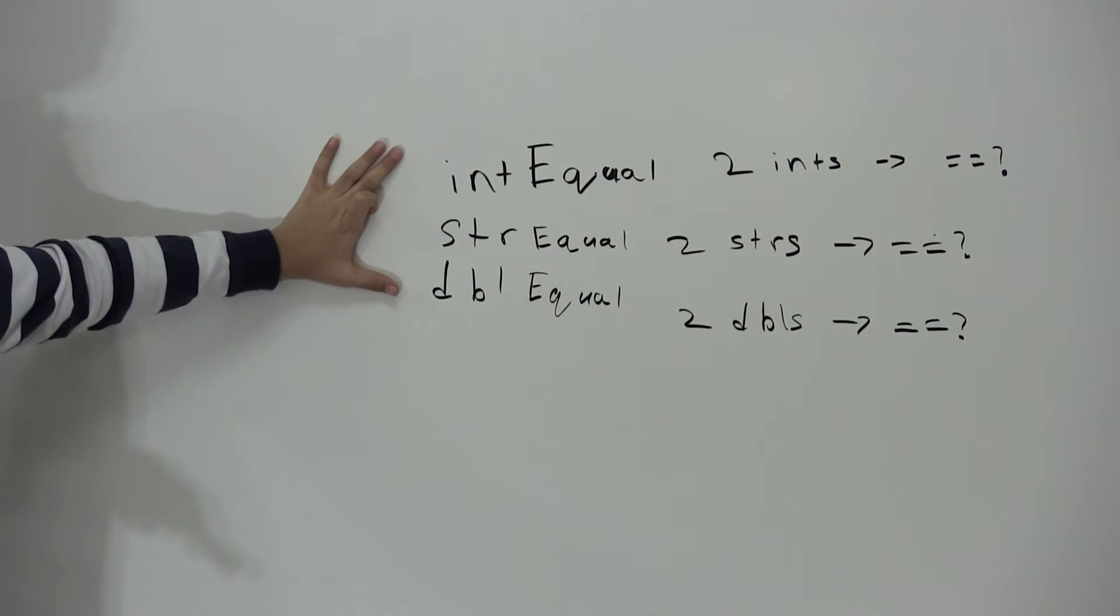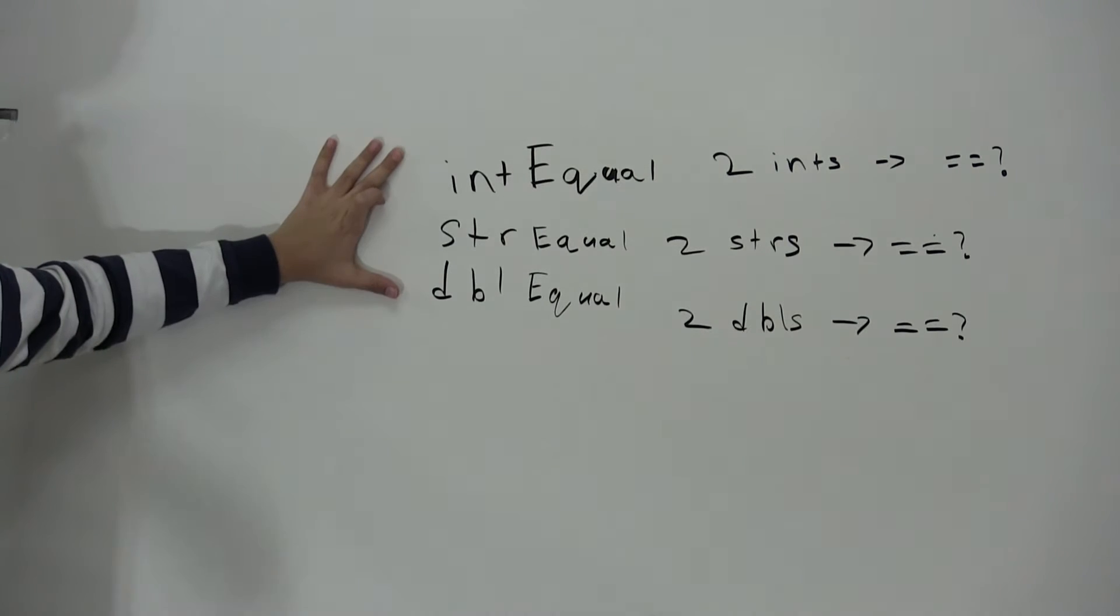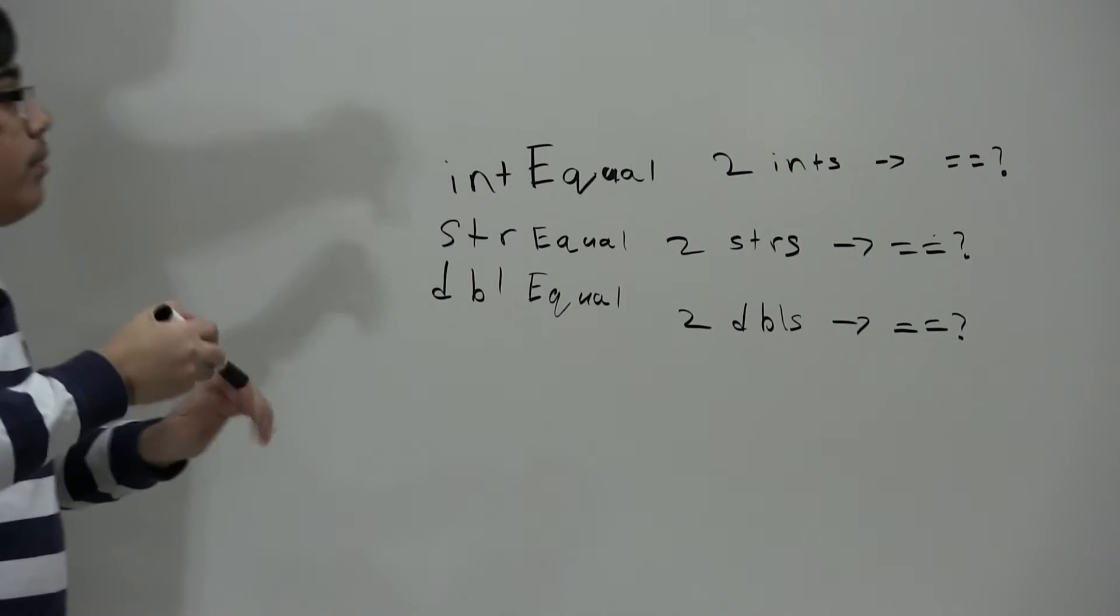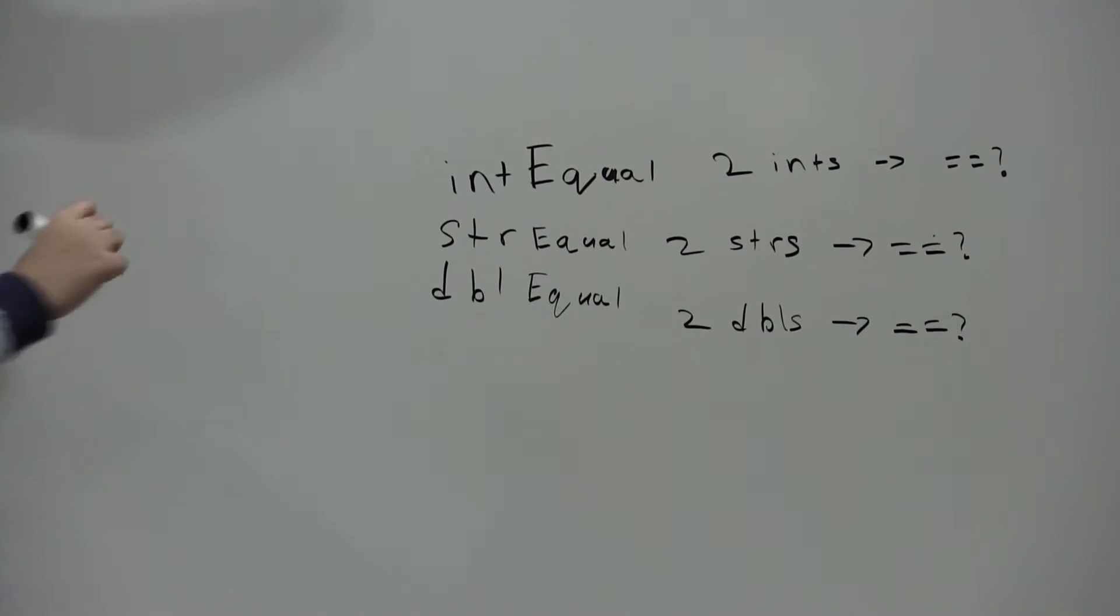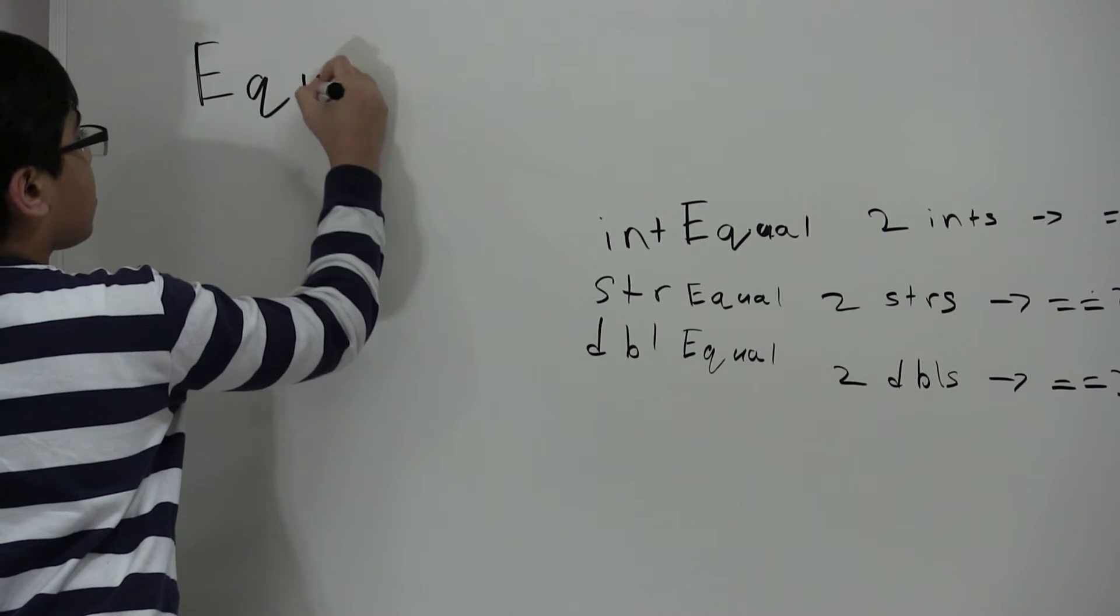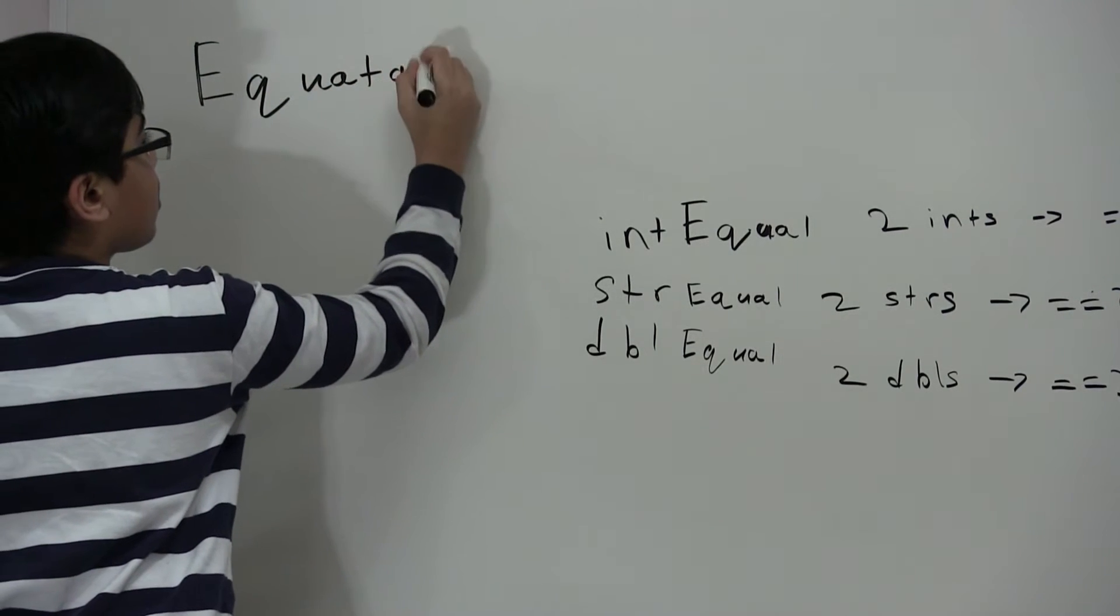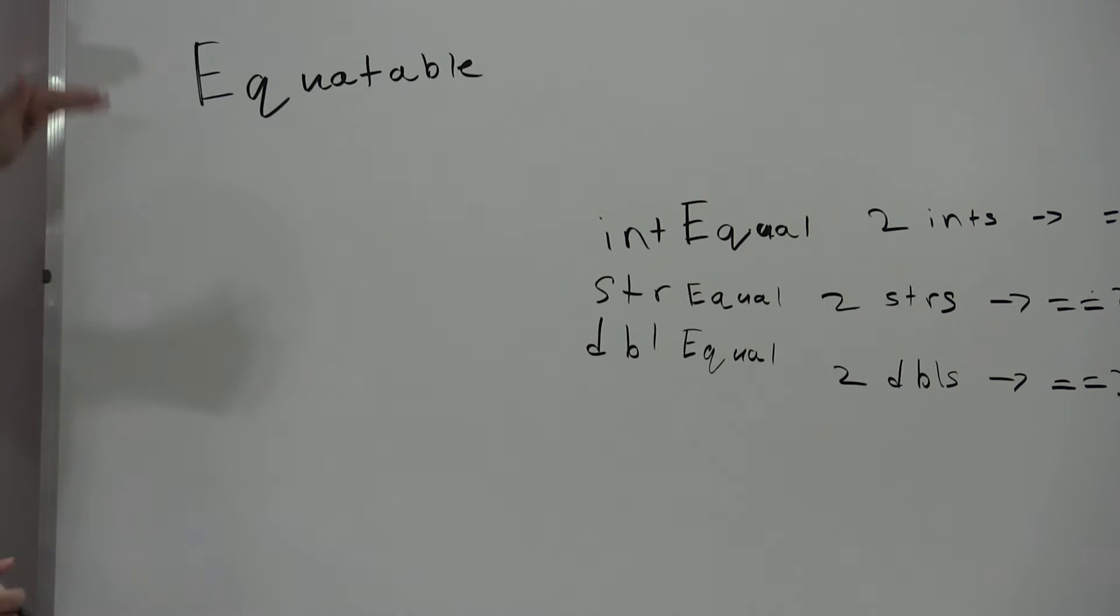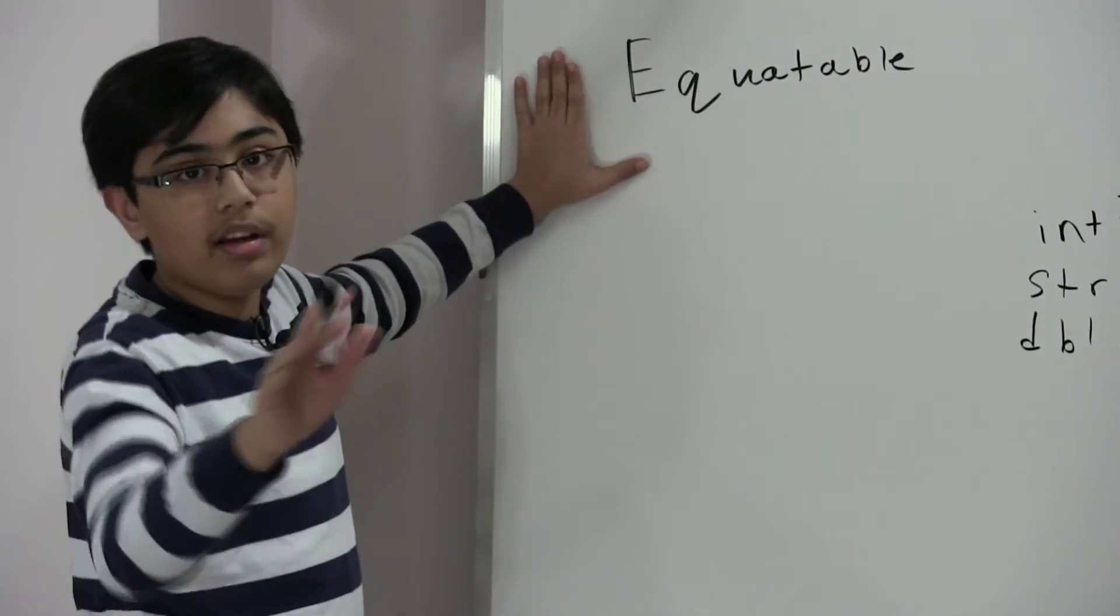Well there's one answer: equatable. They also inherit from comparable but we'll talk about that later. Now in Swift, equatable is a protocol which determines if a class inherits from this, then this class has to first of all override some methods from this protocol.